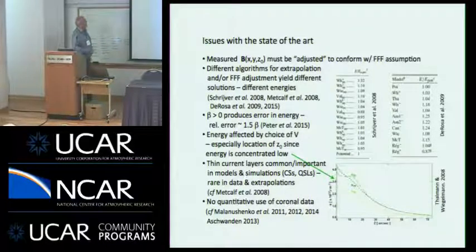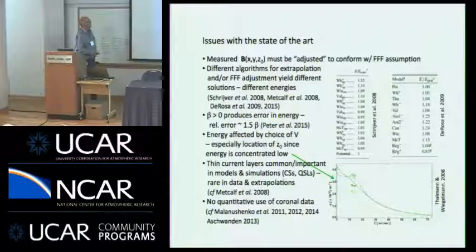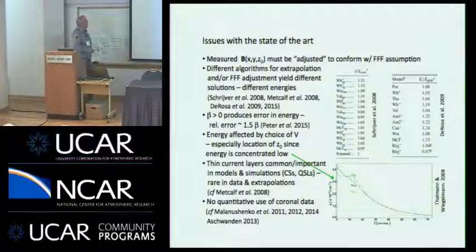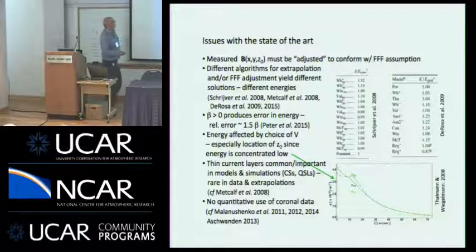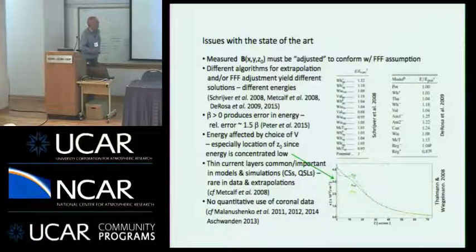Every one of these algorithms — here's a list from comparisons by Carl Schriver and Mark DeRosa — shows that all the solutions are different. The way you adjust the data gives you different answers. The energies are sometimes below what should be the bottom line of one, all the way up to about 30% free energy stored. Assuming beta equals zero makes your error in the energy estimate of order beta, and beta can be significant — you might be making 10 or 20% errors. If you look at these numbers and subtract one, you're making essentially 100% errors in the free energy.